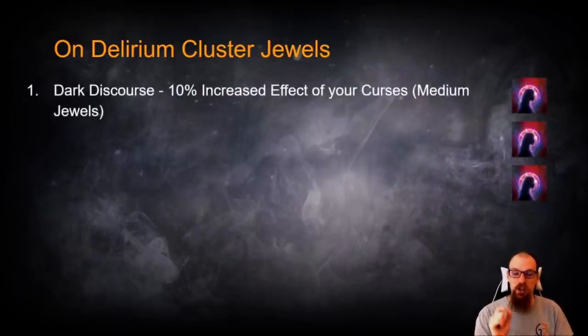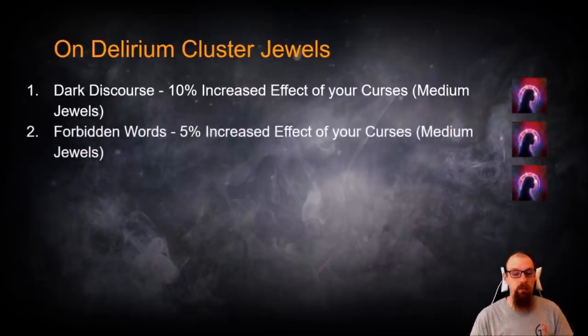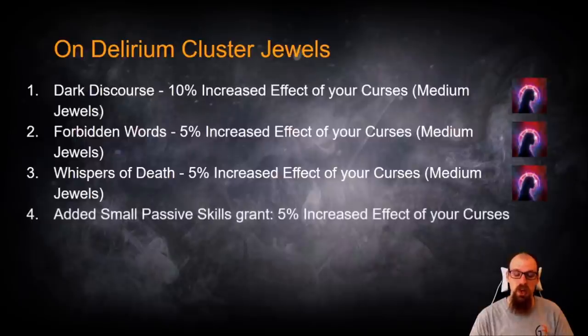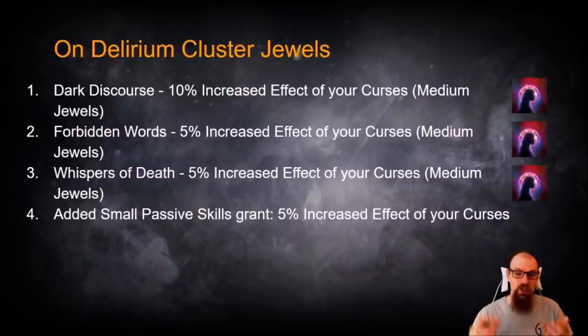First off, you can add Dark Discord onto a Medium Cluster Jewel that will give you 10% increased effect of your curses. You can combine this with Forbidden Words, which gives 5% increased effect of your curses. Whispers of Death, which also is 5% increased effect of your curses. All of these are available on Medium Jewels. Lastly, the added small passive skills grant 5% increased effect of your curses on the style of Medium Jewels.